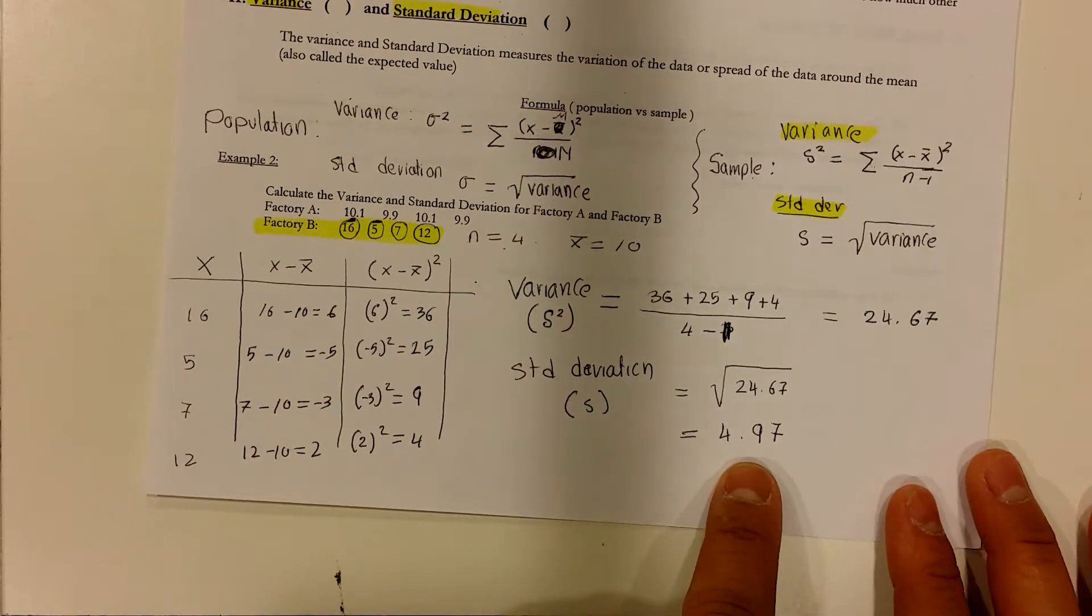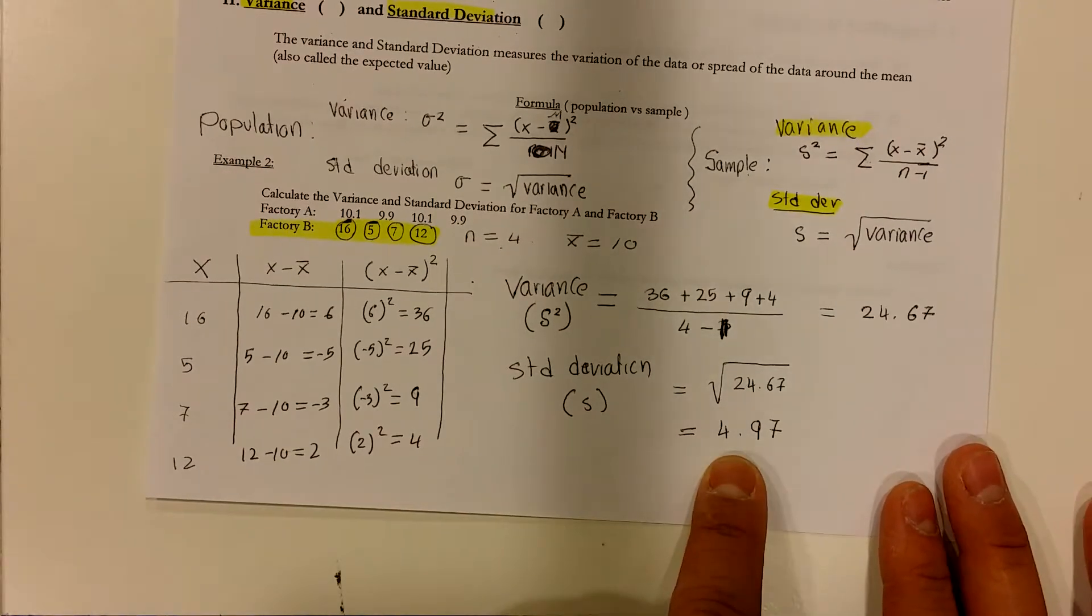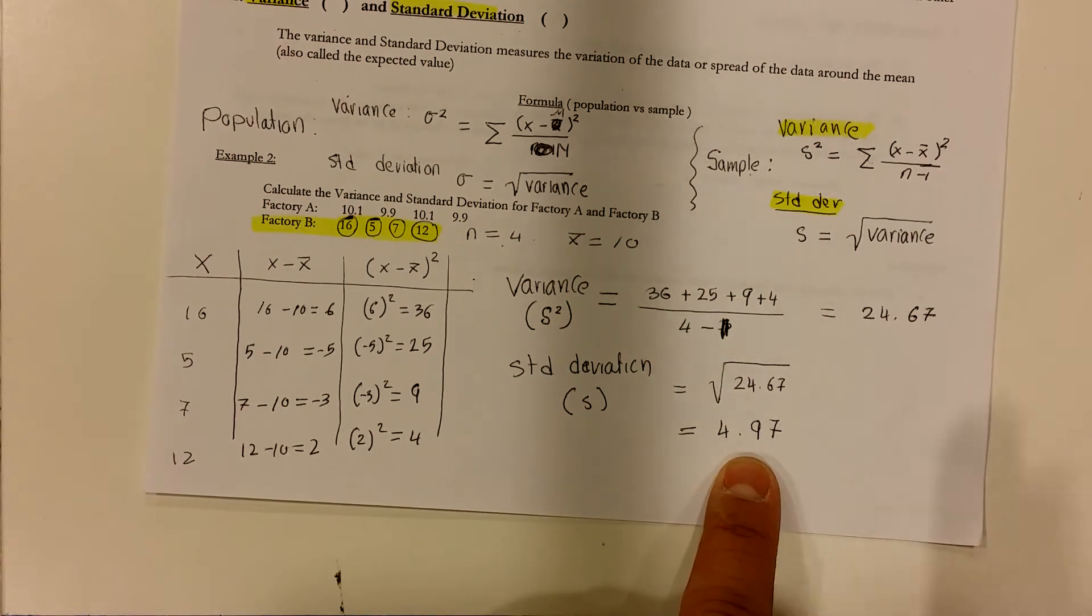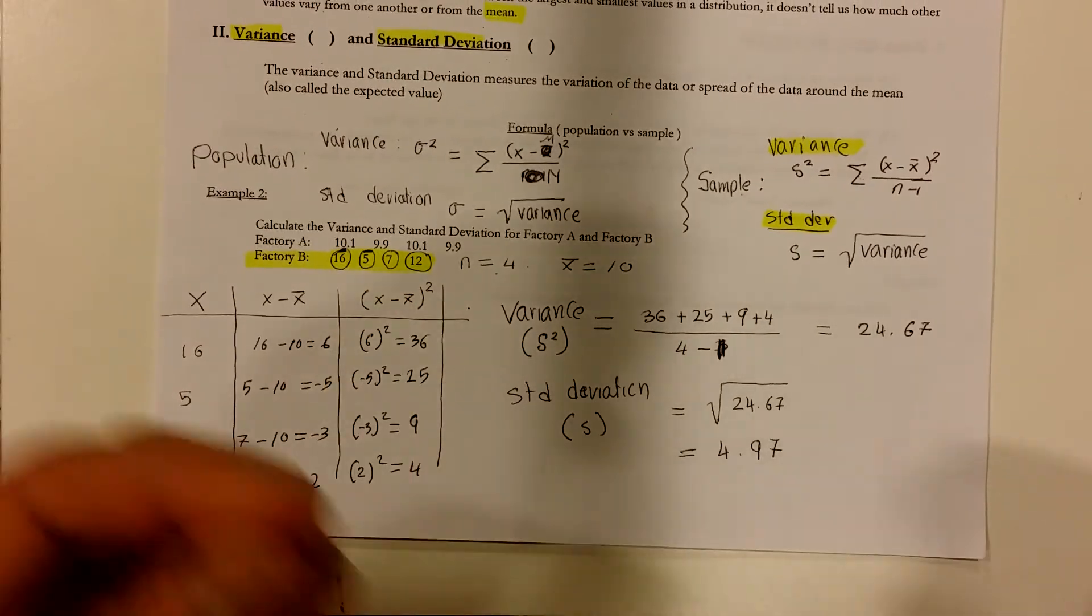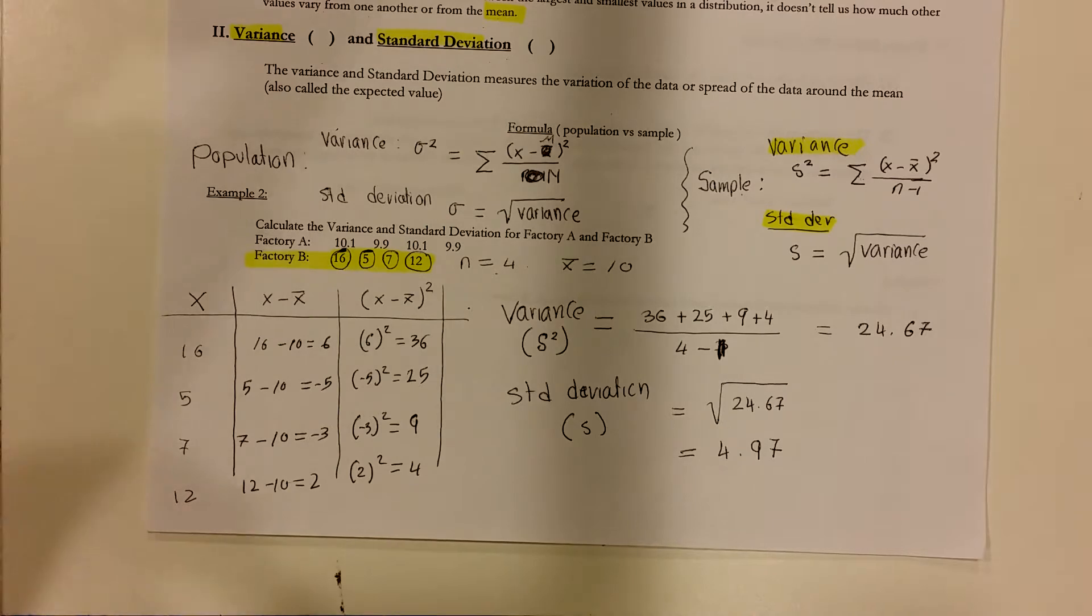When the standard deviation is big, 4.97 is somewhat kind of big. When that number is big, then our data vary. It has a wider spread.